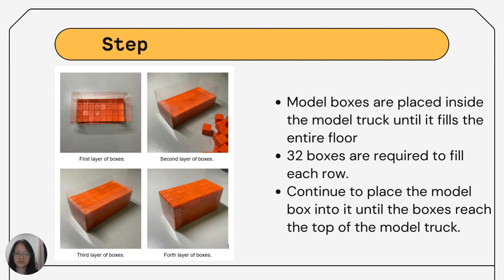Next, the model boxes are placed inside the model truck until they fill the entire floor. After counting, it is determined that 32 boxes are required to fill each row. Continue to place the model boxes to create new rows until the boxes reach the top of the model truck.